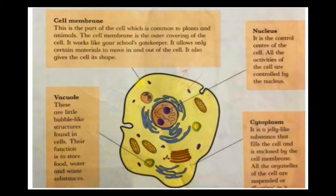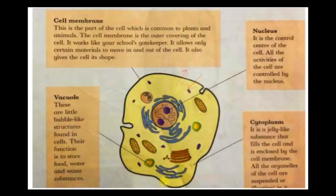The cell membrane is a part of the cell which is common to both plants and animals. It is the outer covering of the cell, as you can see in this picture. It works like your school's gatekeeper — it allows only certain materials to move in and out of the cell. It also gives the cell its shape.